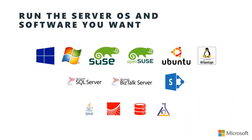One of the things people assume about running virtual machines in Azure is that it's going to have to be a Windows operating system. While Windows Server and client operating systems are certainly available, you're not limited to those. We also support SUSE, OpenSUSE, Ubuntu, and OpenLogic distributions, as well as having pre-configured images that already have products installed like SQL Server, SharePoint, Oracle, and Puppet.